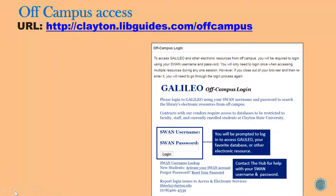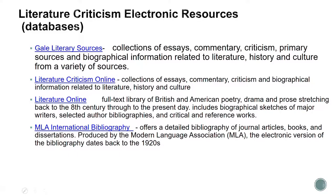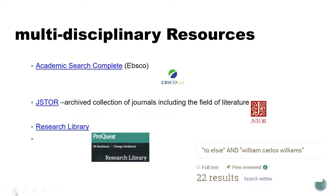If you use Galileo off campus you will be prompted to log in using your SWAN username and password. These databases are recommended for literature criticism: Galileo Literary Sources, Literature Criticism Online, Literature Online, and MLA International Bibliography. For multidisciplinary resources, try Academic Search Complete, JSTOR, or Research Library. JSTOR is particularly useful because it has articles going all the way back to the 1600s, so if you're looking for something from a long time ago, JSTOR is a good bet.